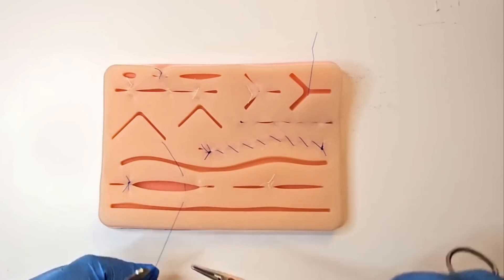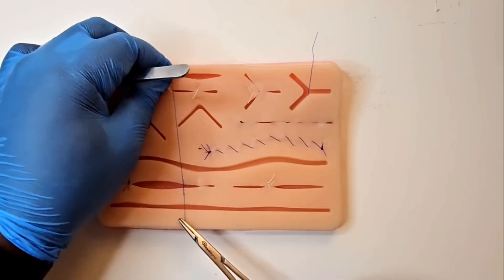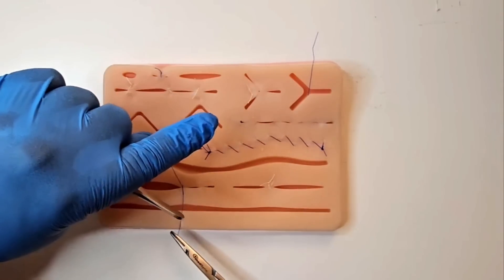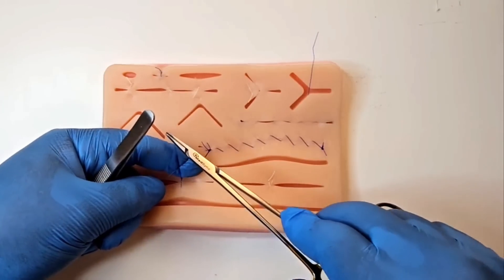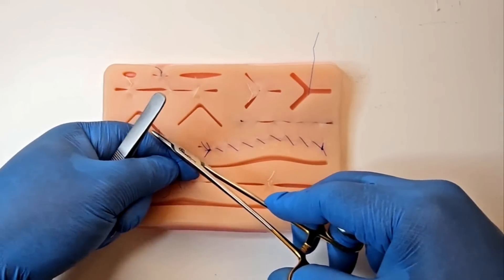You tie your standard surgeon's knot. Keep the tension on the short suture and sweep your index finger under the long suture. Place the short suture on top like a cross and press down on the junction between the two.